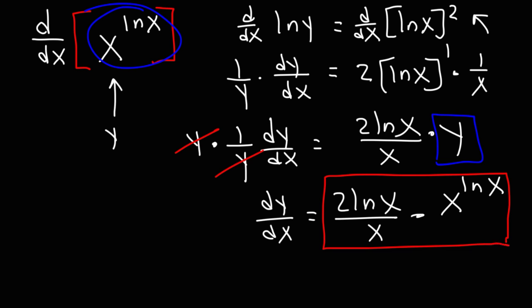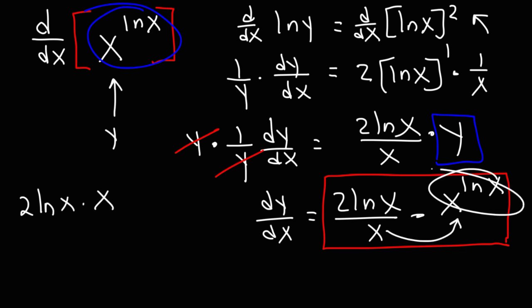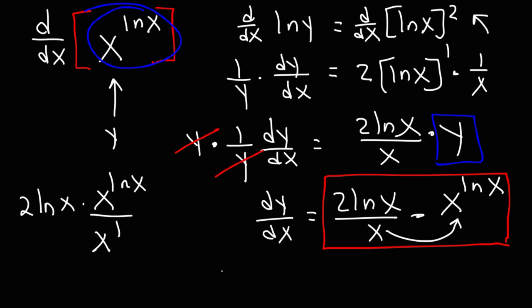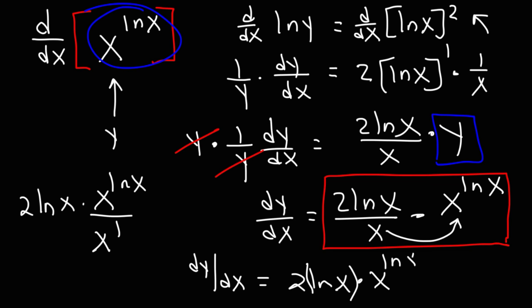Sometimes it's good to see if we can simplify. We can move this x to the bottom of that expression, so we have x^(ln x) over x, or over x to the first power. When you divide by a common base, you subtract the exponents — for instance, x⁷ divided by x³ is x^(7−3). So therefore dy/dx is equal to 2 ln x times x raised to the (ln x − 1). That's another way to represent the final answer.